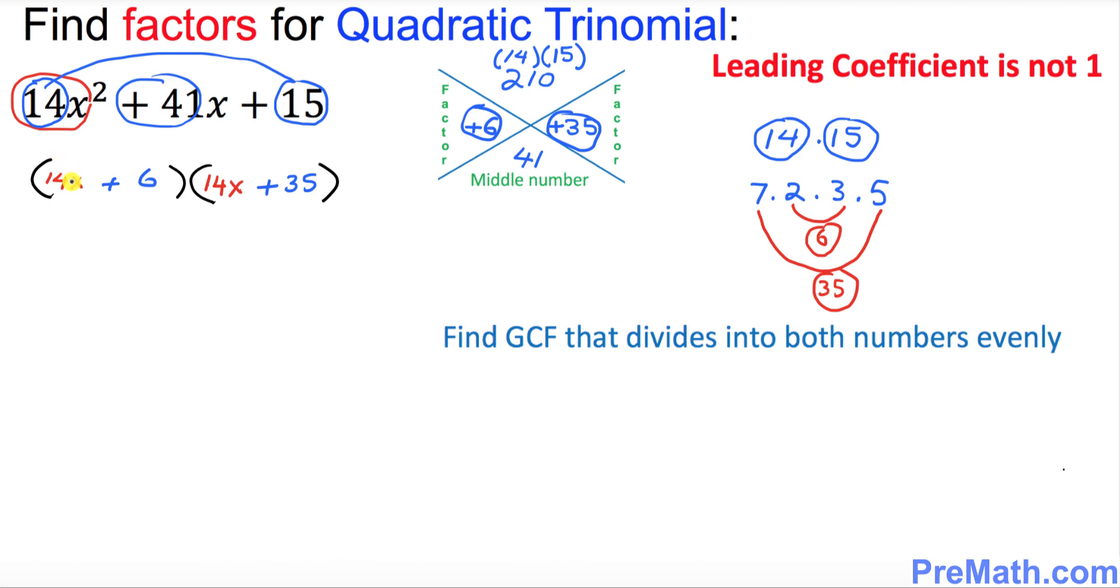Now in our next step I want you to focus on this very first parentheses. In this first parentheses our numbers are 14 and 6. I want you to find the GCF for these two numbers. That means we find the largest number for these two numbers that can divide into both of them at the same time. And you can see that the number is going to be 2. So you divide both of these numbers by 2.